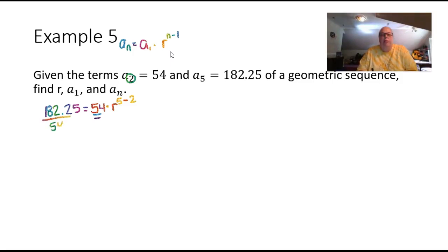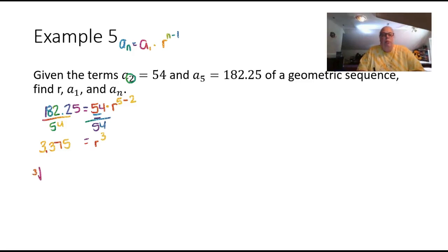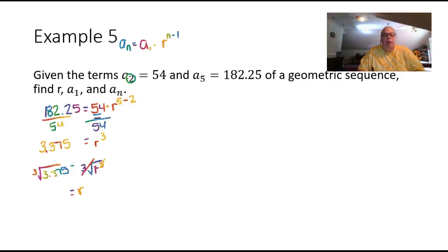Dividing both sides by 54: 182.25 divided by 54 gives 3.375, so r cubed equals 3.375. To solve a cubic, we take the cube root of both sides. On a calculator without a cube-root key, raise 3.375 to the power 1/3. This gives r equals 3.5, or 3/2.